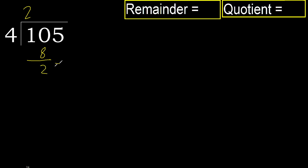Next, bring down: 25. 4 multiplied by 7 is 28 — 28 is greater. 4 multiplied by 6 is 24 — 24 is not greater. 25 minus 24 is 1.